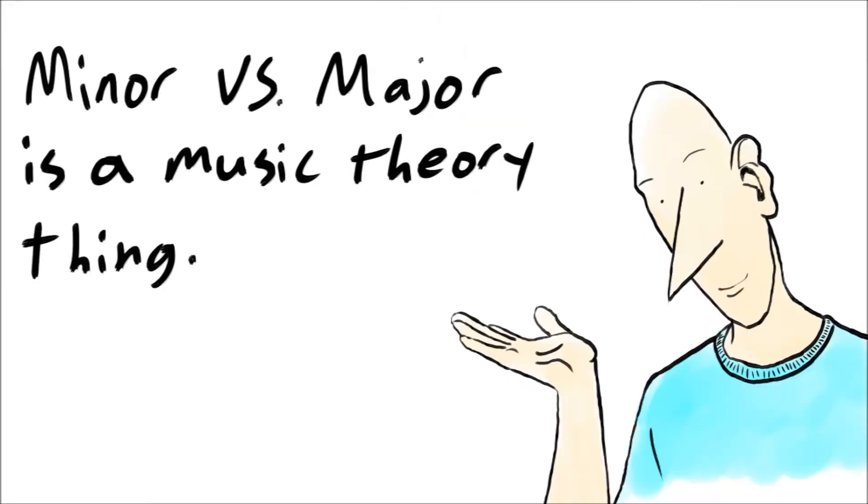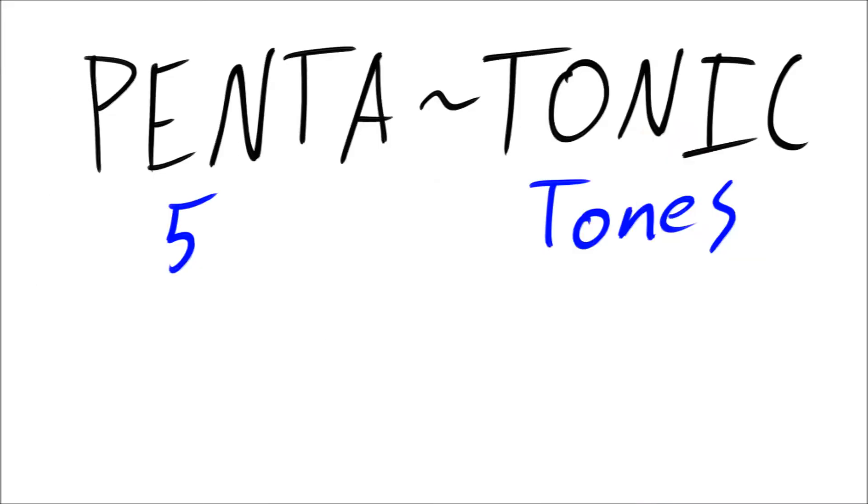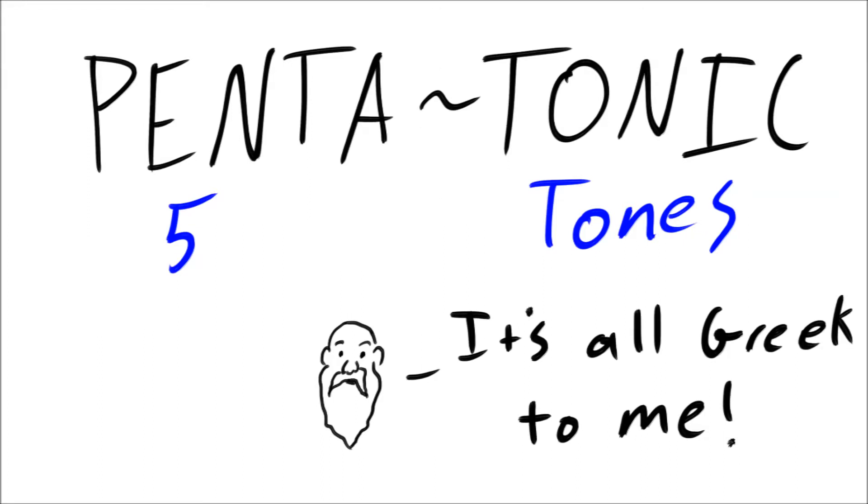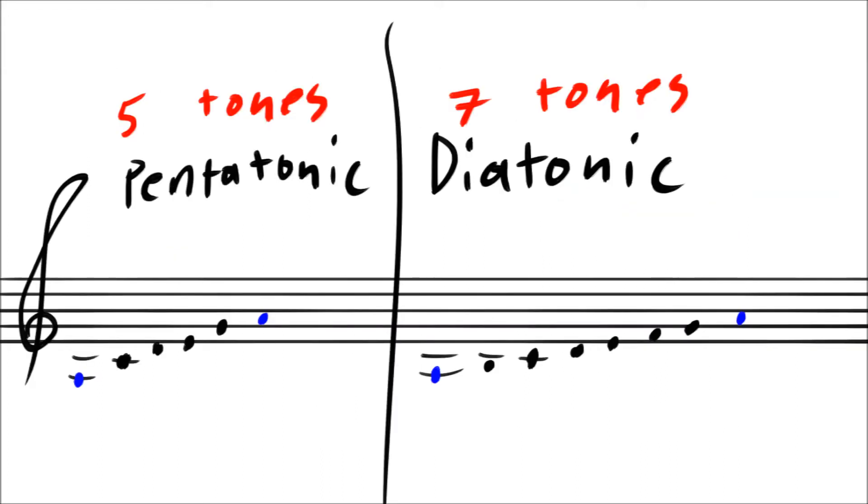The minor versus major thing we could learn at a different time, so let's focus on the word pentatonic. All it means is five tones. Yes, just a fancy way of saying five different notes before the notes are recycled up an octave. To compare, the normal major and minor scales are diatonic, or seven tones.